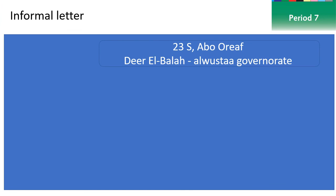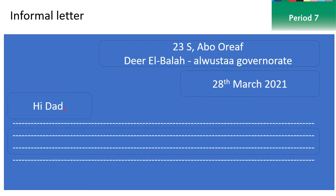Now you can see this example: '23 S Street, Deir al-Balah, 28th of March 2021. Hi Dad,' then the message, and at the end 'Best,' followed by a comma. Don't forget the comma after 'Best.'